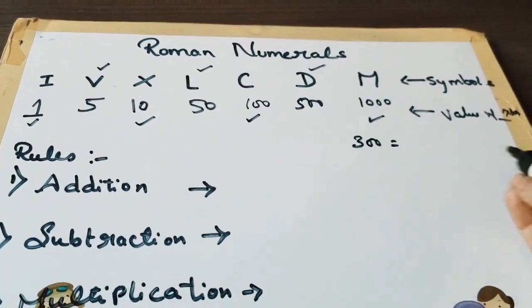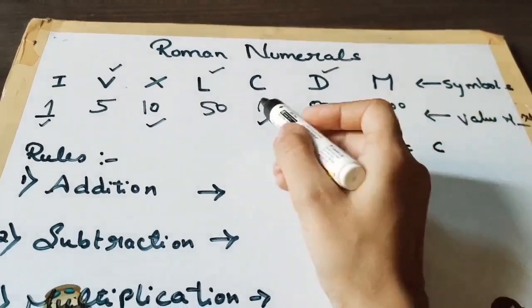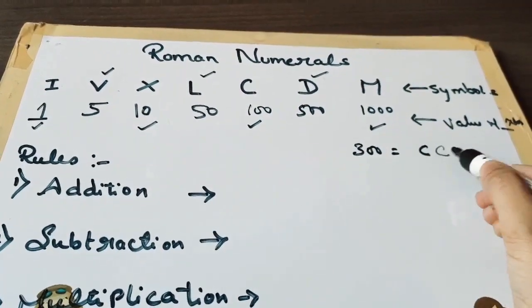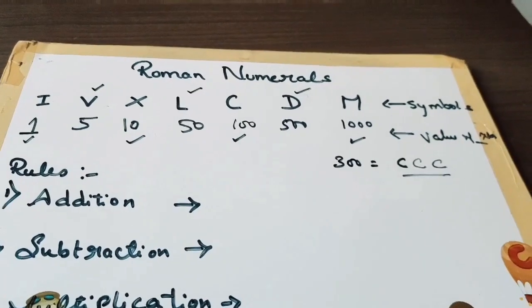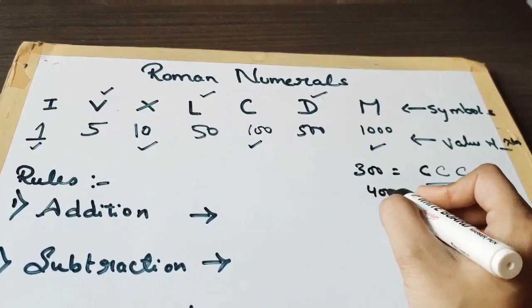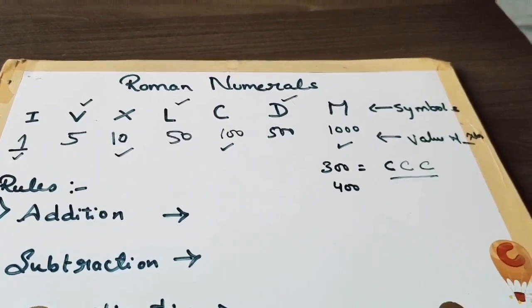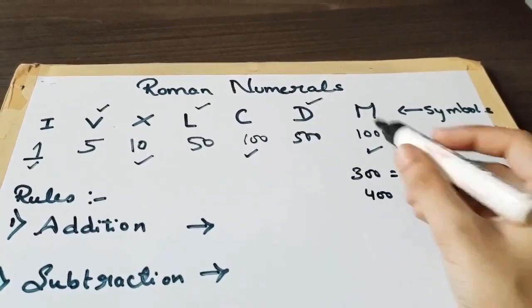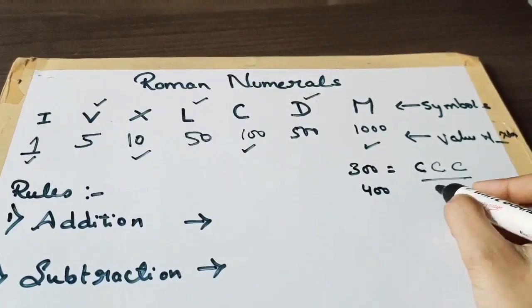For example, the number is 300. So what we have to write? C is 100 value, so C C C—we can write three times.